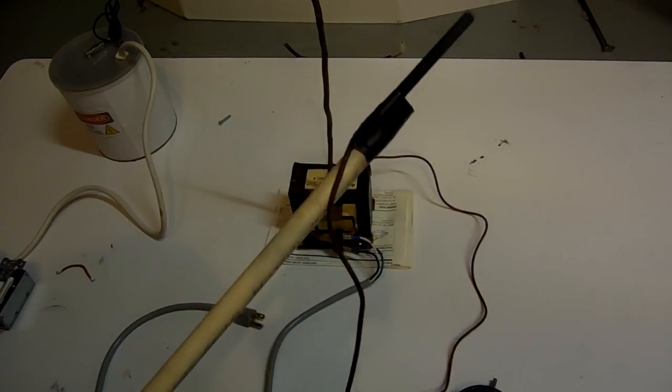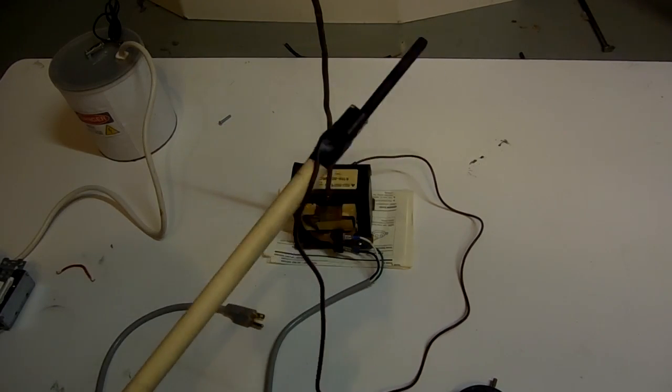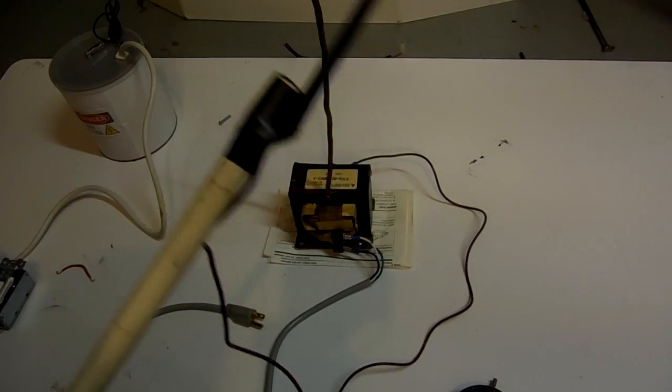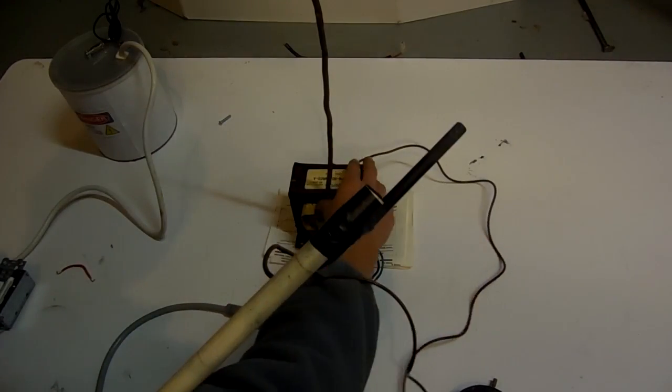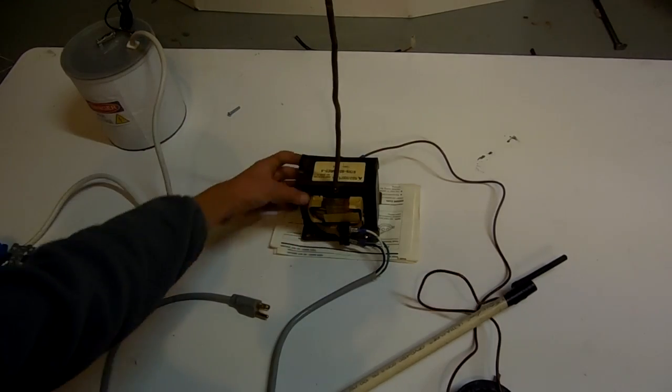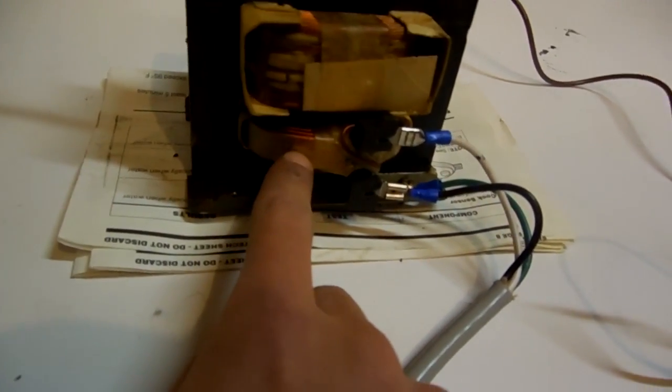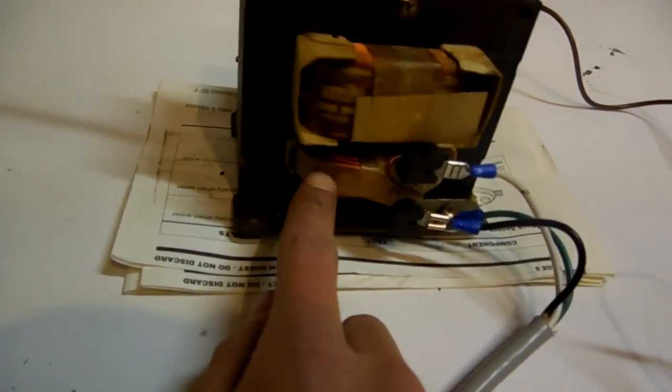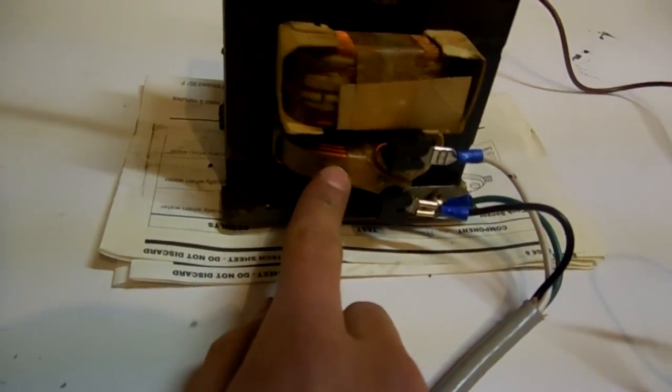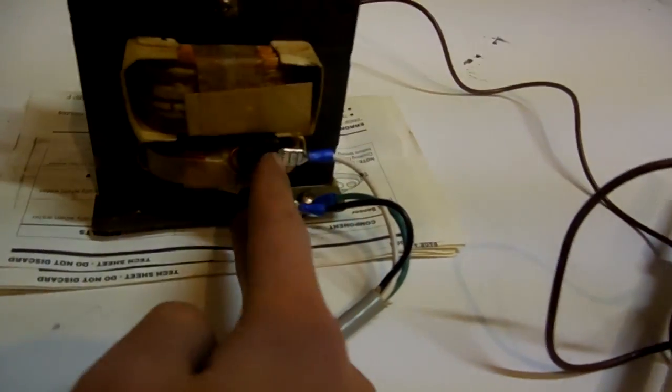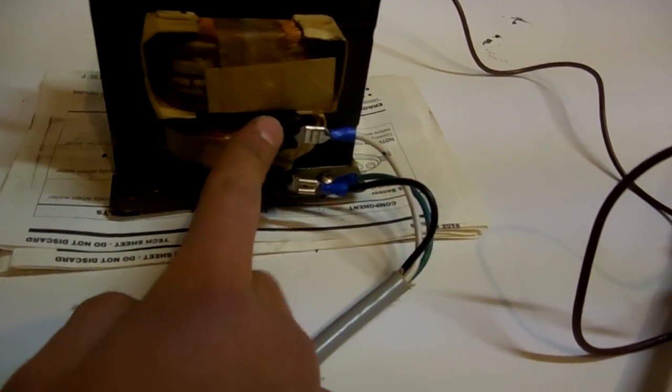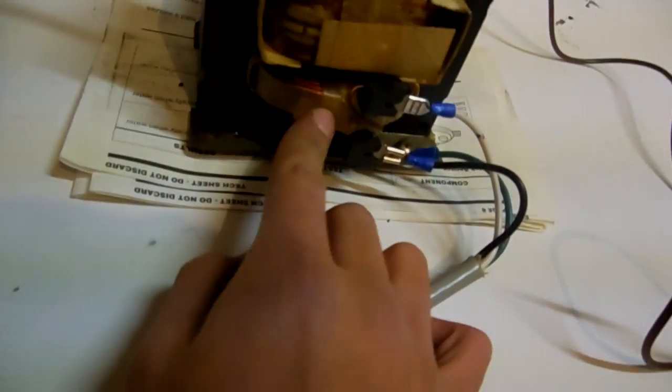For arcing, you're going to want a chicken stick so you don't touch the wire or anything that has to do with the high voltage. And on the MOT, there is two coils. There's this coil right here, which is the low voltage primary, and depending on where you live, it'll either be wired for 120 volts AC or 240 volts AC.